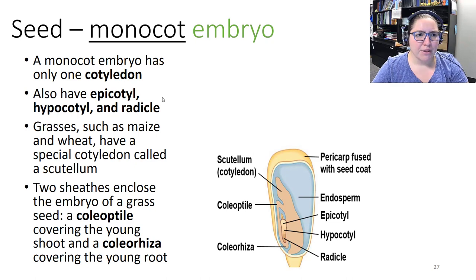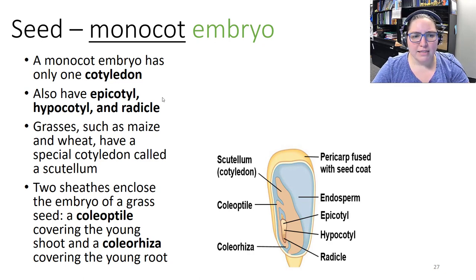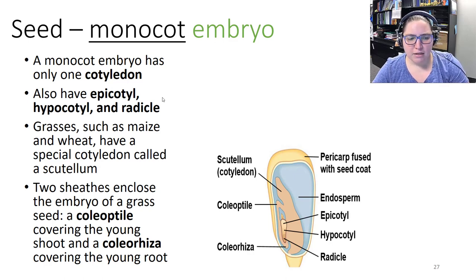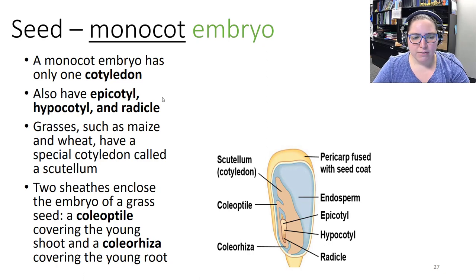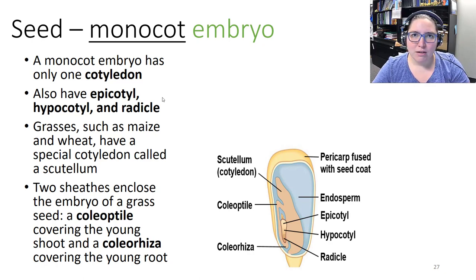Eudicot and monocot embryos differ. The eudicot embryo has an embryonic axis attached to two thick cotyledons (seed leaves). The epicotyl is above the cotyledons, the hypocotyl is below, the radicle is the embryonic root, and the plumule comprises the epicotyl, young leaves, and shoot apical meristem. Some eudicots like castor bean have thin cotyledons that absorb nutrients from the endosperm. Monocot embryos have only one cotyledon. Grasses like maize have a special cotyledon called the scutellum, a coleoptile covering the young shoot, and a coleorhiza covering the young root — rhiza meaning root.